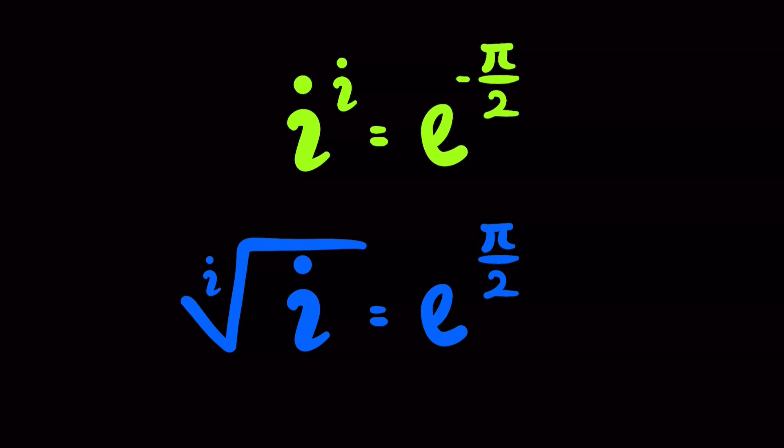What does it even mean to take i to the power of i, or the imaginary number, the square root of negative one to the power of itself, or take the i-th root of i? Well, your guess is as good as mine, but they both produce real results. So let's see how we get them.